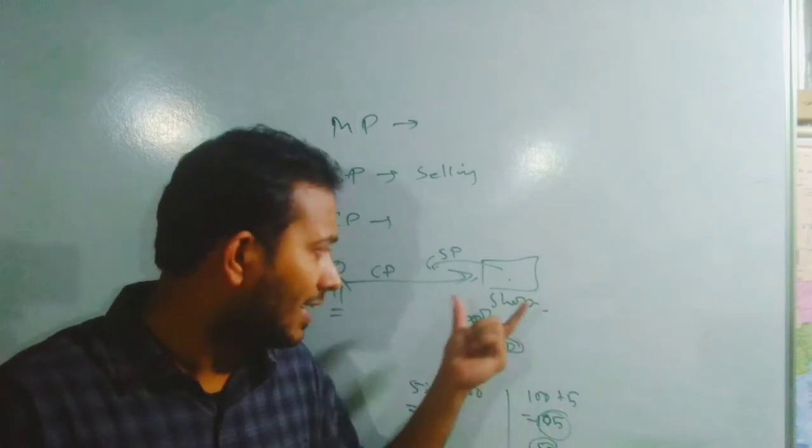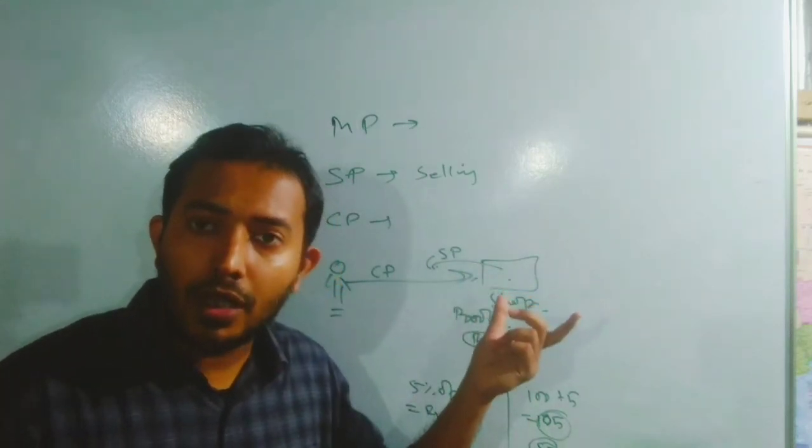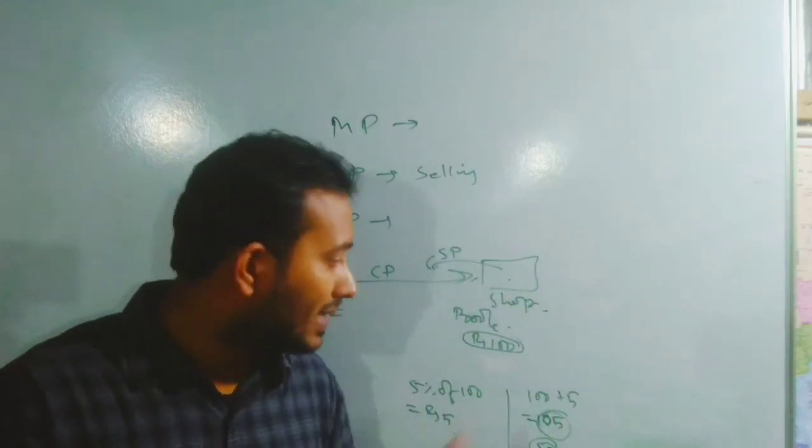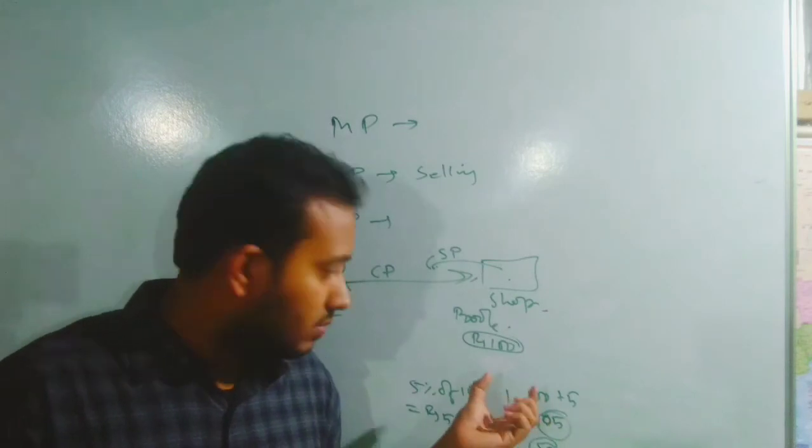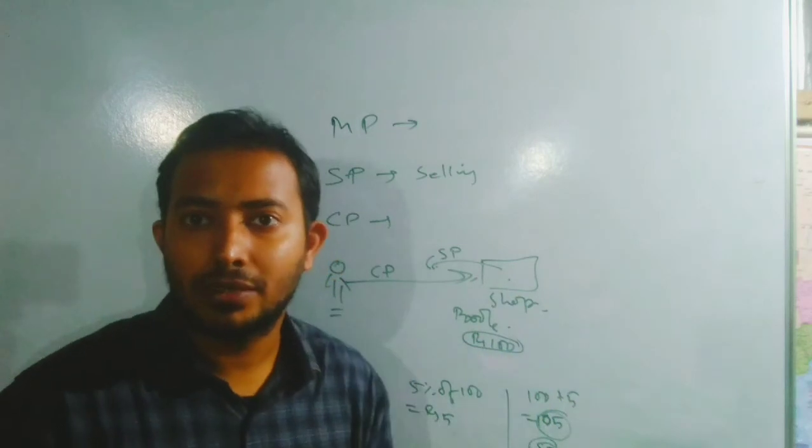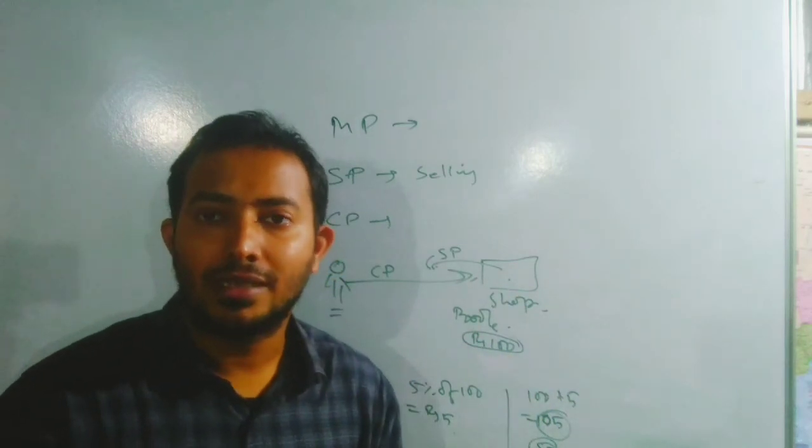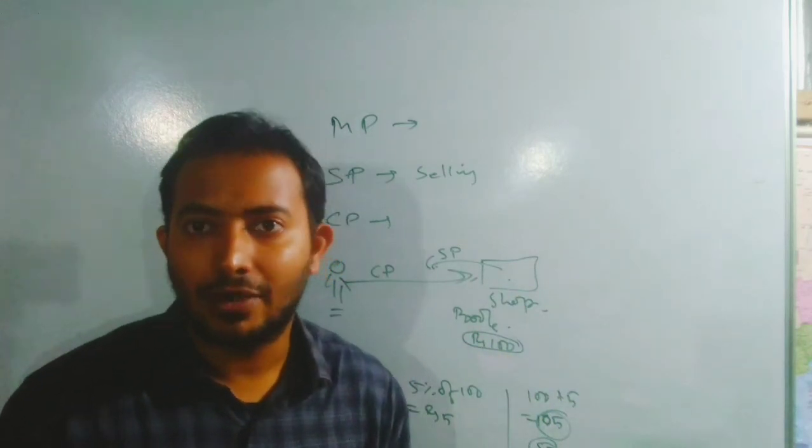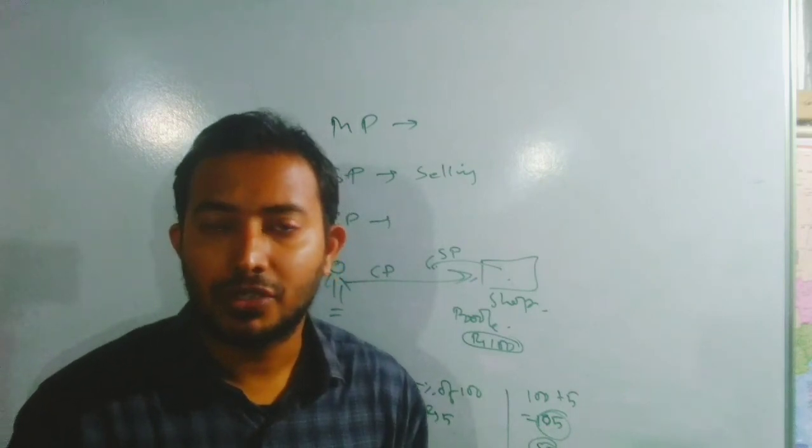So selling price. Selling price means I cannot take as a selling price. For him or her, selling price will be that only. But extra 5 will be paid by him or her to the government. That is not his income. They will not take that one as their income. Remember this thing.